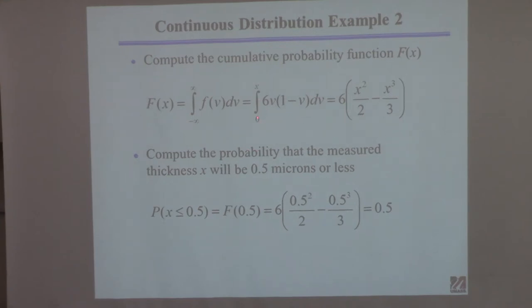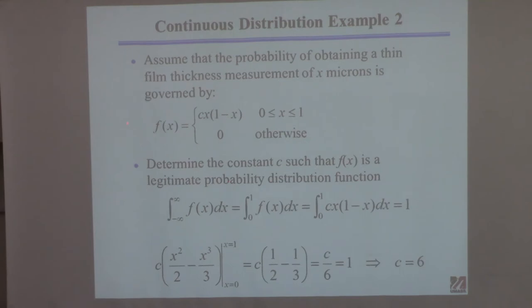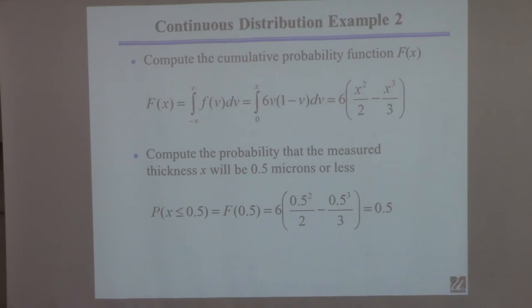So if we perform this integration between 0 and x, knowing that c equals 6 which we just computed, you get this expression. To recapitulate: here is the probability function, and here is the cumulative distribution function. If x is less than 0, this is going to be 0, and if x is greater than 1, it's going to be 1 — I didn't write that, but that's the implication.